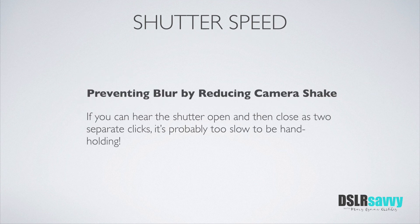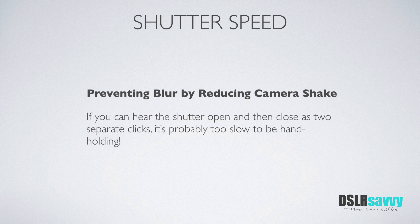Another useful tip: while taking a photo, if you can hear the shutter open and then close as two distinct clicks, you're probably at too slow a shutter speed to hand-hold your camera. That's when you need to get your shutter speed up or put the camera on a tripod. If you just hear one solid click, you're in a faster range and probably in a better situation to hand-hold.